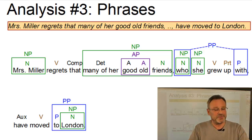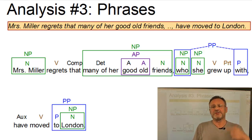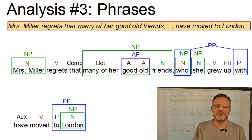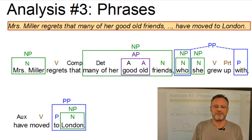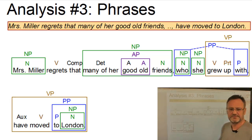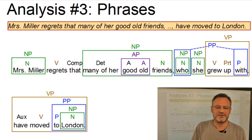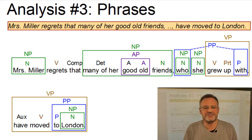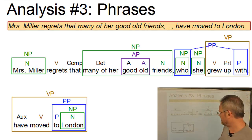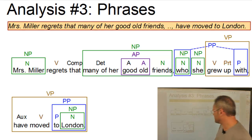Thus we have a prepositional phrase. In a prescriptive version it should be with whom she grew up, in which case the prepositional phrase could be recognized more easily. Now we can look at the verb phrases. We have one verb phrase, grew up with whom, and we have the verb phrase have moved to London with the auxiliary verb as a pre-modifier and to London as a post-modifier.